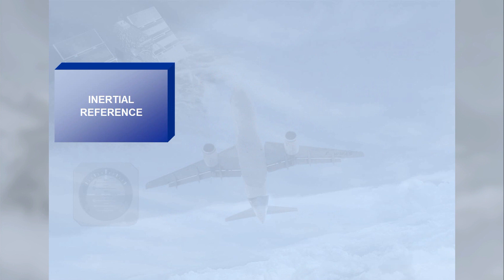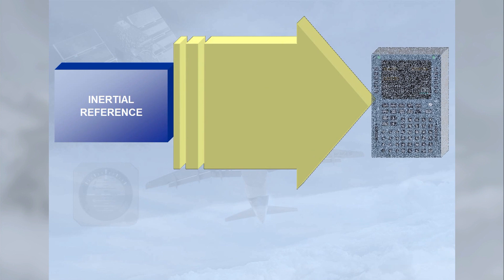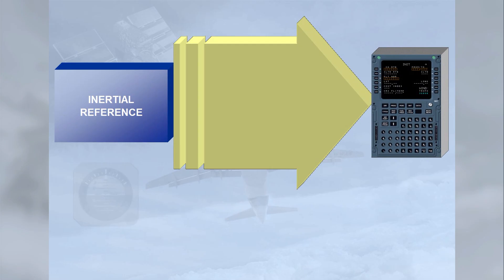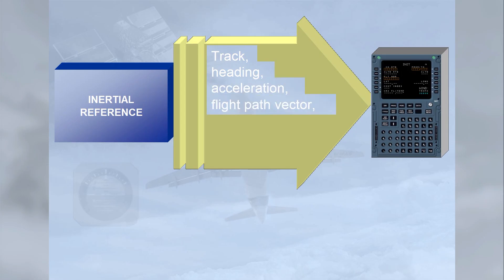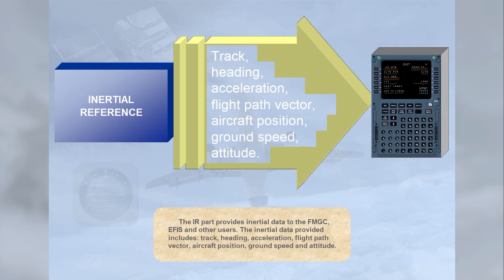The IR part provides inertial data to the FMGC, EFIS, and other users. The inertial data provided includes track, heading, acceleration, flight path vector, aircraft position, ground speed, and attitude.